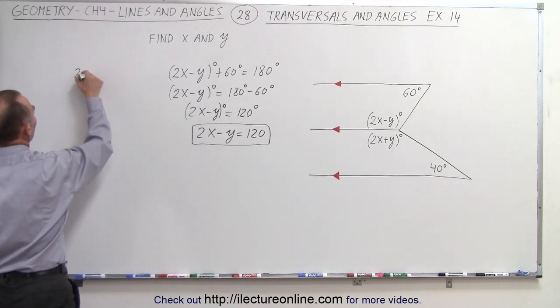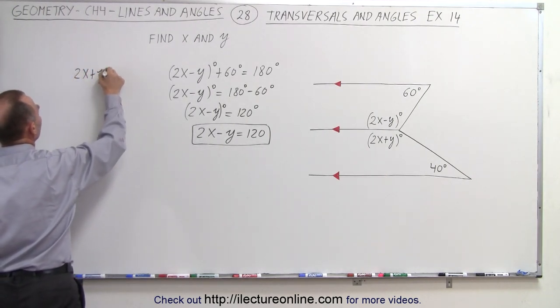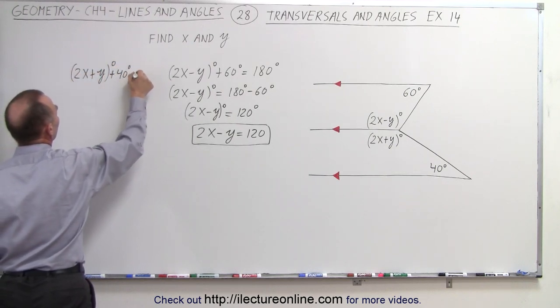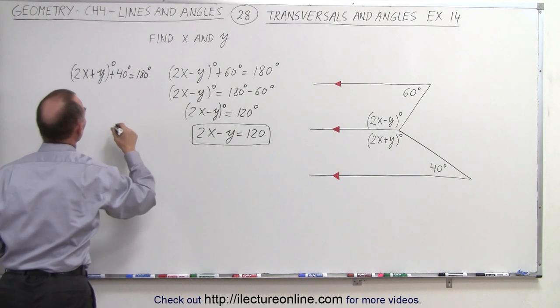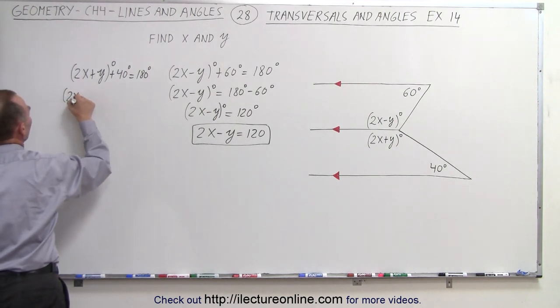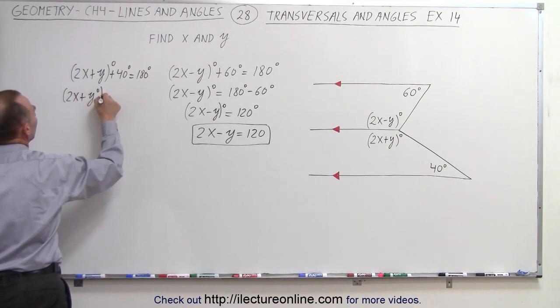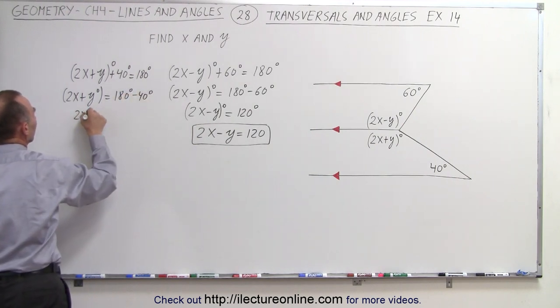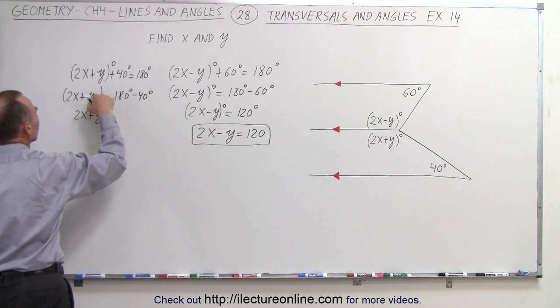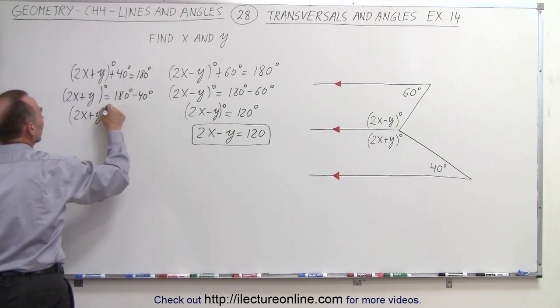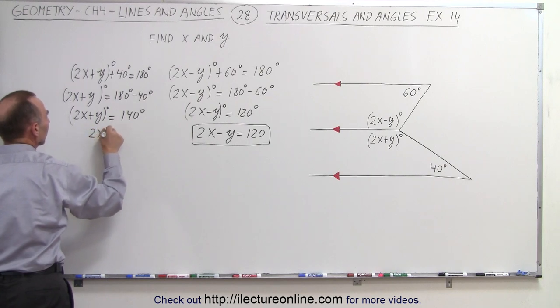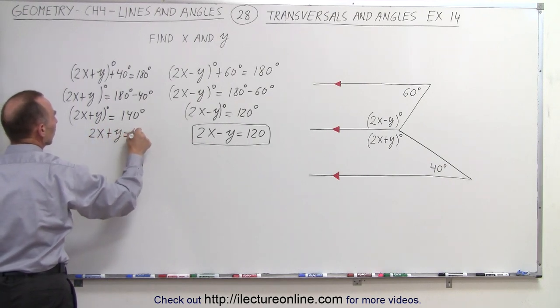So we can write here that 2x plus y degrees plus 40 degrees must add up to 180 degrees. In other words, that 2x plus y degrees is equal to 180 degrees minus 40 degrees, or 2x plus y must equal to 140 degrees, which indicates that 2x plus y equals 140.